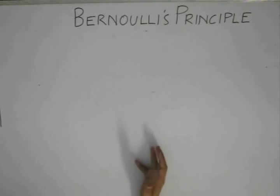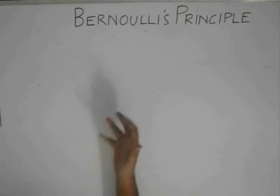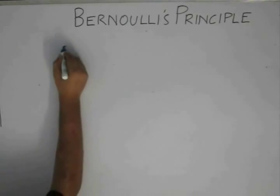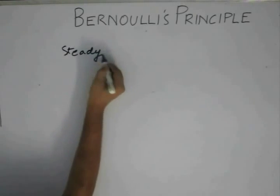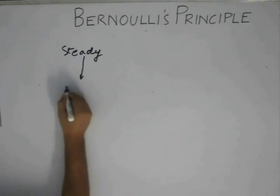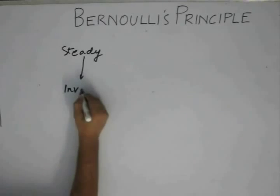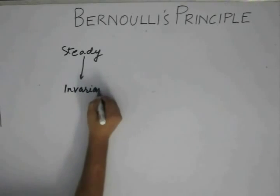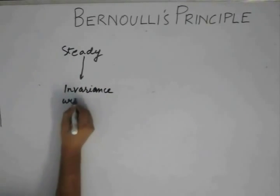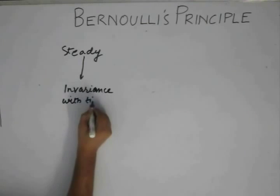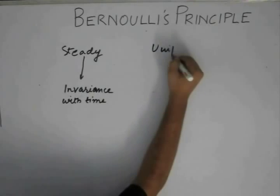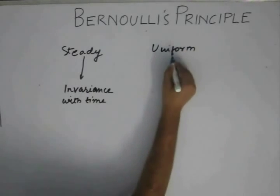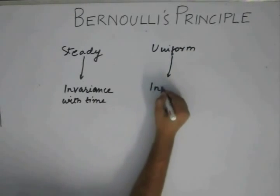At this point, let me differentiate between steady and uniform. Steady is associated with invariance with time, and uniform is associated with invariance with position.